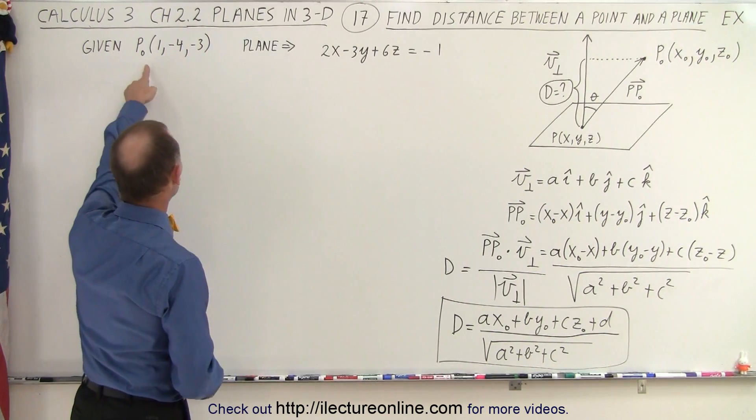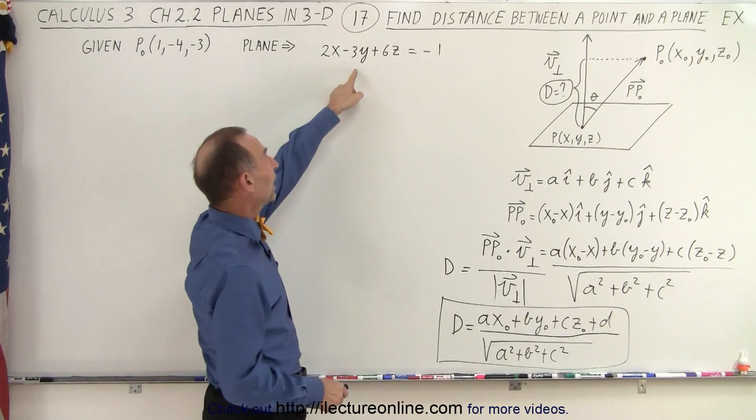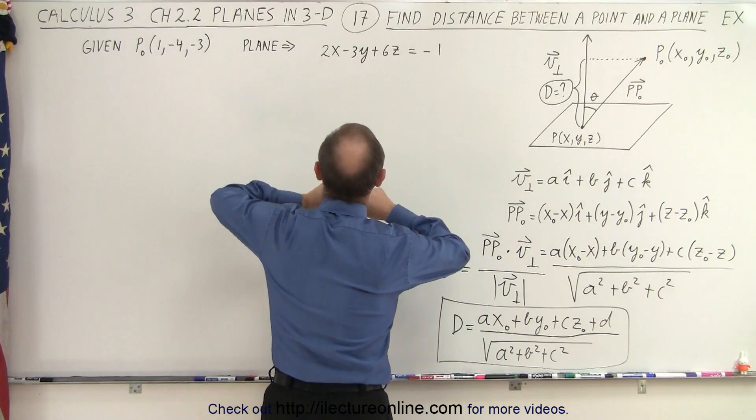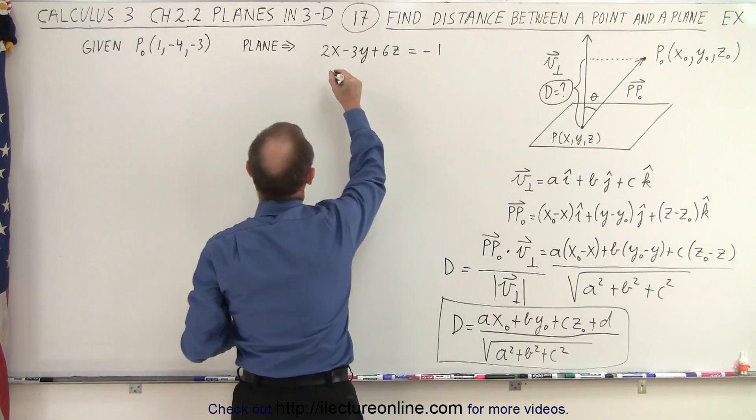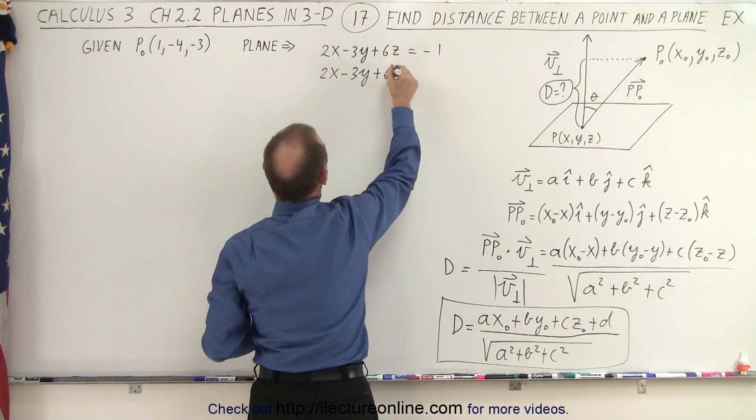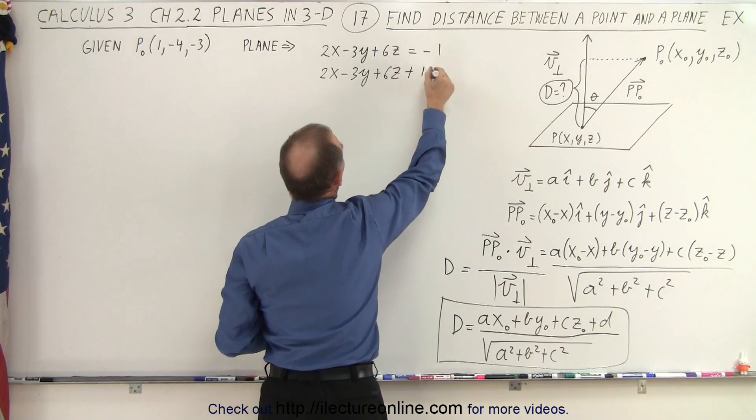So let's say we're given a point in space and the equation of a plane. Now it's not quite in the right format so let's write it in the right format. So this equation can be written as 2x minus 3y plus 6z and that would be plus 1 equals 0.